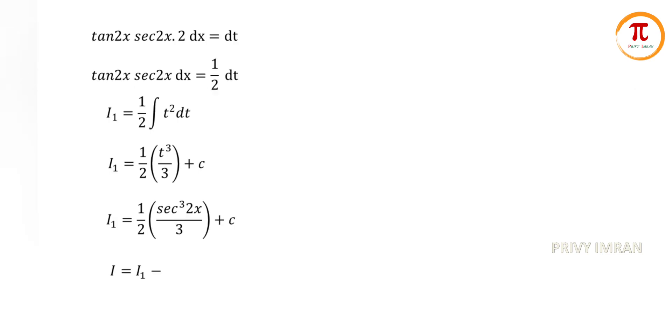Now let me substitute in I, where I is equal to I1 minus I2. Let me substitute I1 and I2 values. Hence my final answer is secant 2x whole cube upon 6 minus secant 2x upon 2 plus c.